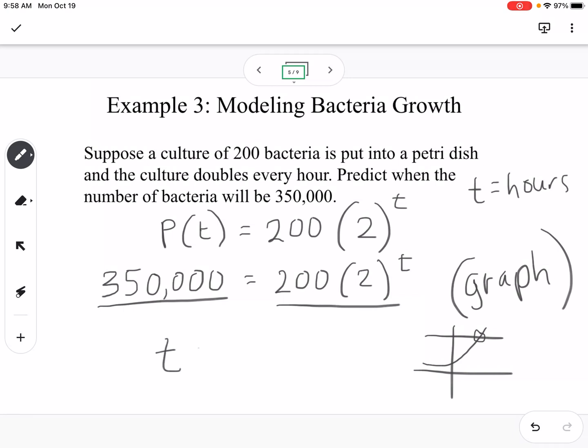When you do that, you get that T equals 10.77, or if we're writing this in terms of hours, we would say 10 hours and 46 minutes. That's that T value right there where they intersect.